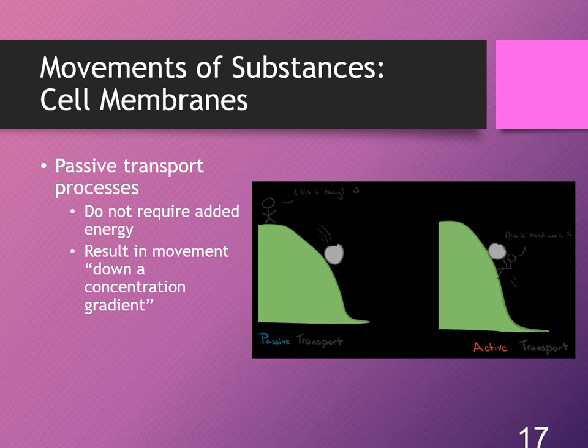When we talk about passive transport, substances move down a concentration gradient — from a higher concentration to an area of lower concentration. There are four types of passive transport processes: diffusion, osmosis, dialysis, and filtration.